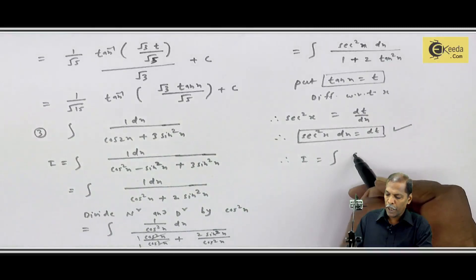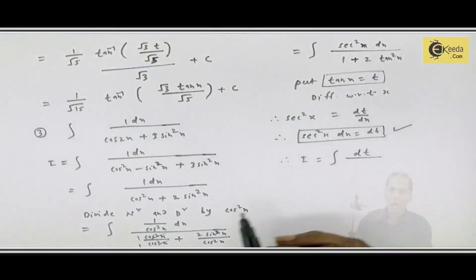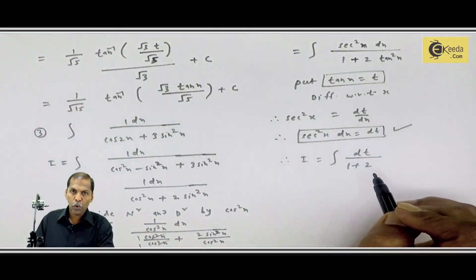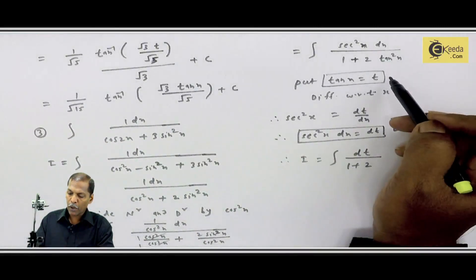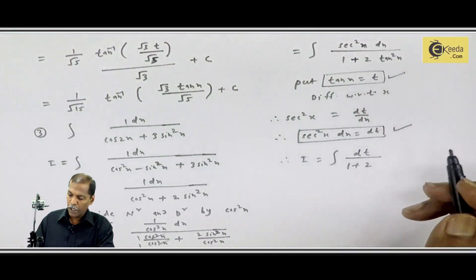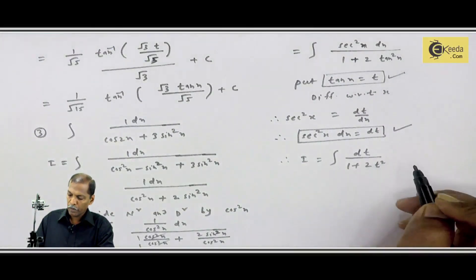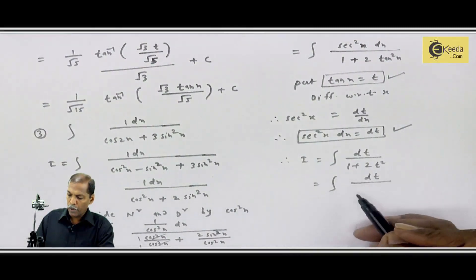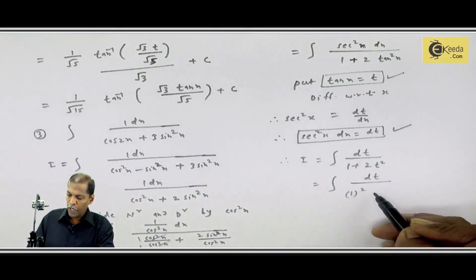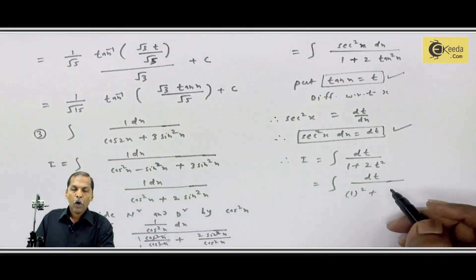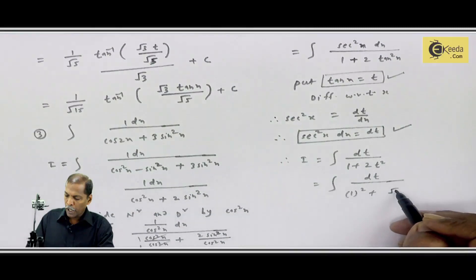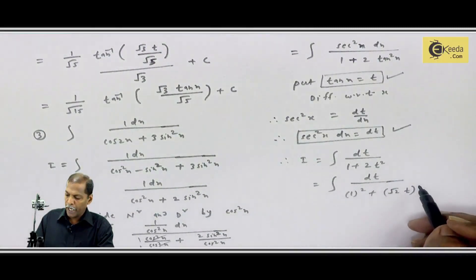We replace dt upon denominator ho gaya hamara 1 plus 2 aur tan square x ko hum yahan se replace karenge t square. To yeh ho gaya hamara integral dt upon 1 kiska square hai? 1 ka aur 2 complete square nahi hai.